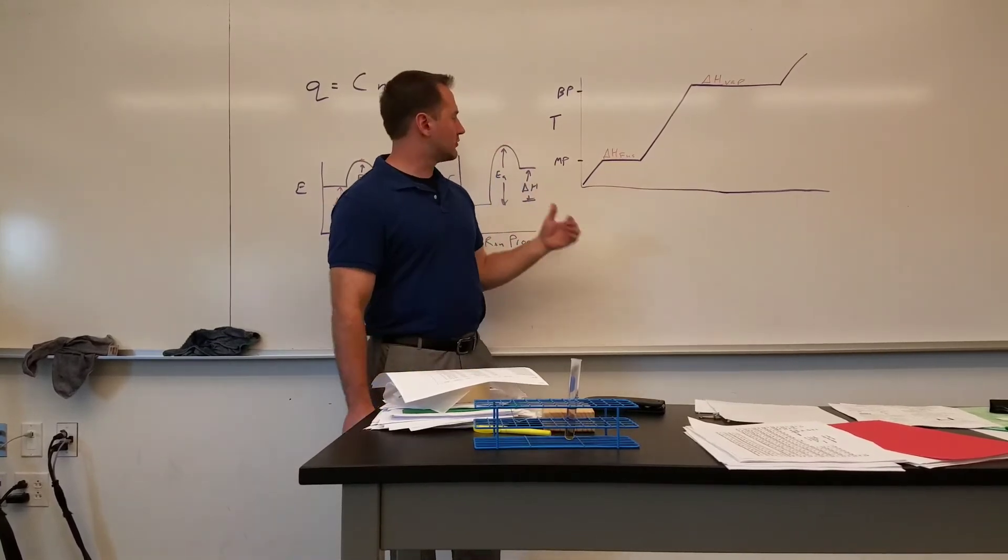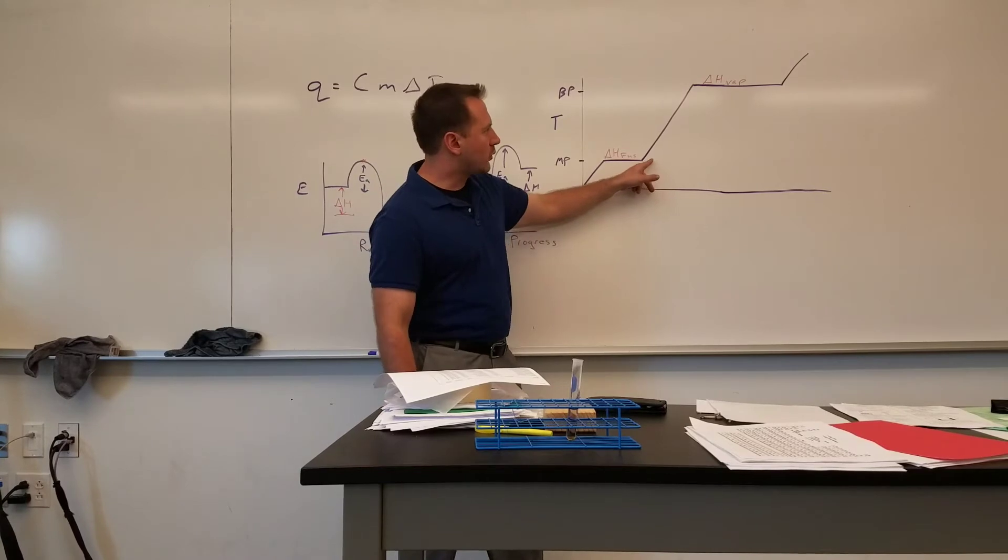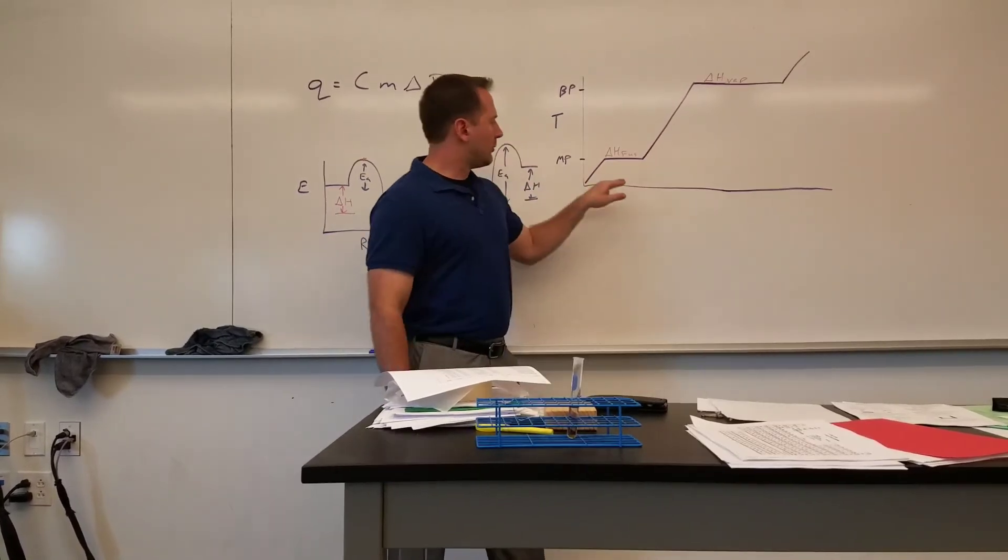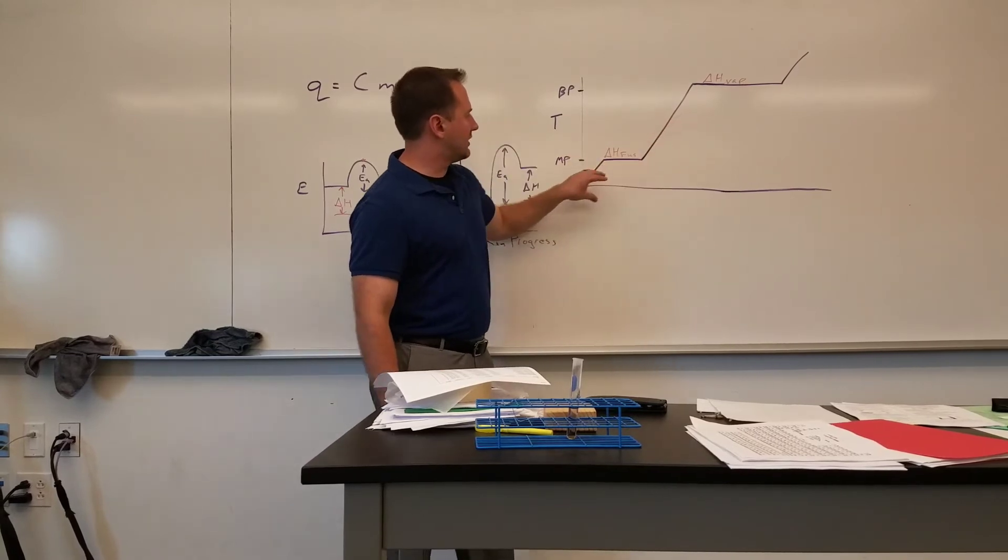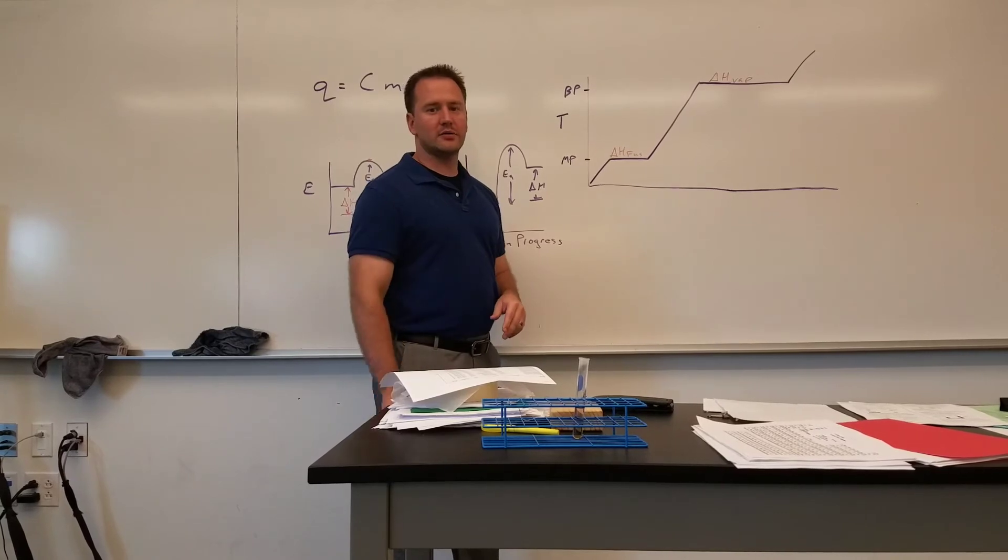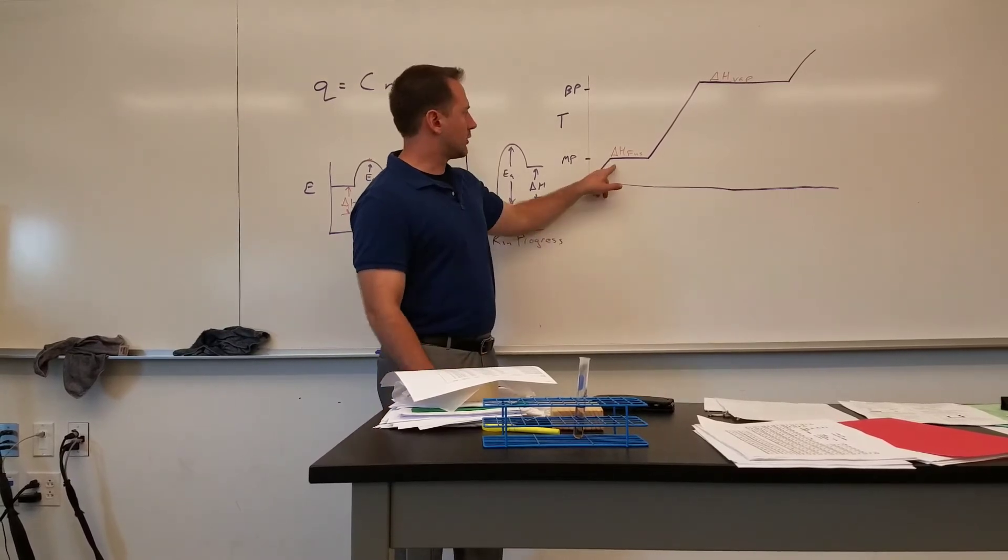At that point, you can use Q equals C M delta T to quantify the heat being transferred as temperature changes. Before we get to the liquid phase from the solid phase, we have the heat of fusion - for water, that's 333 joules per gram.